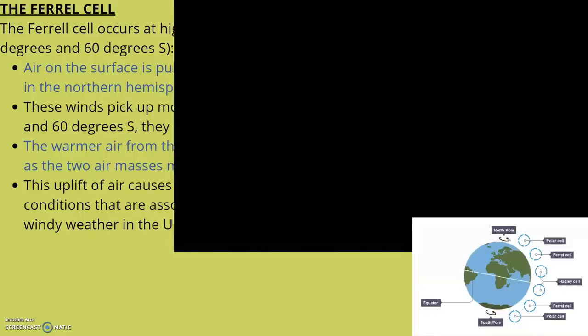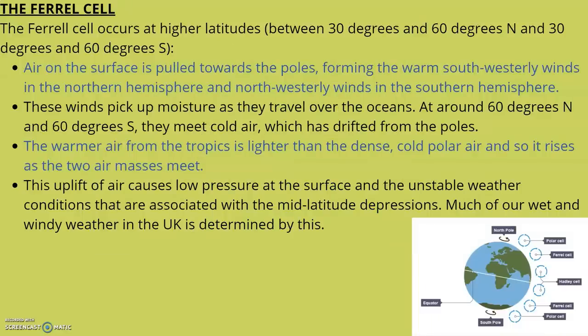Now let's look at the Ferrel cell. The Ferrel cell occurs at higher latitudes, between 30 and 60 degrees north and south. Air on the surface is pulled towards the poles, forming the warm southwesterly winds in the northern hemisphere and northwesterly winds in the southern hemisphere. These winds pick up moisture as they travel over the oceans.